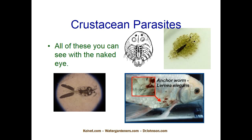We have covered the first and major category of parasites — the ciliates. Now we're going to talk briefly about parasites you can see with the naked eye. It's a group of three parasites: anchor worm, fish lice, and Ergasilus — gill maggots. I've seen one case ever. Guys that work at fisheries looking at catfish all day see gill maggots all the time. Anchor worm we see a lot.